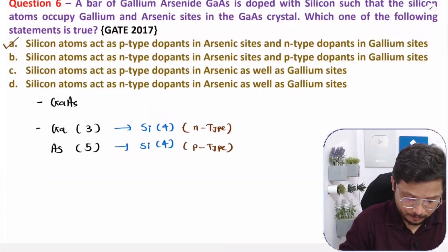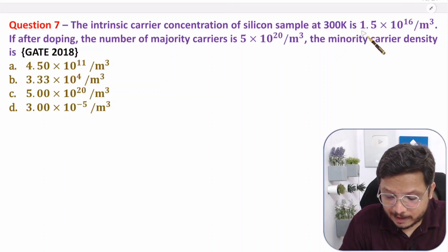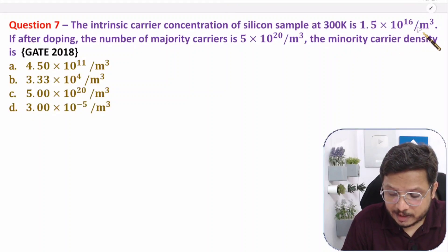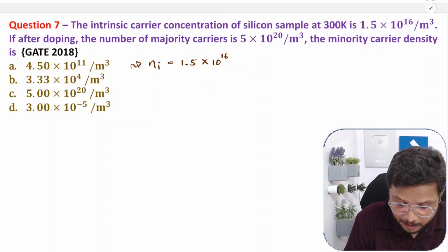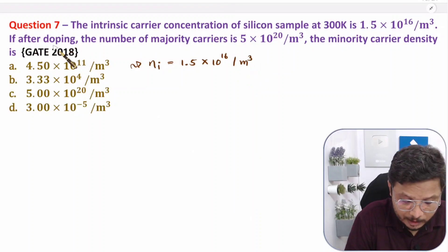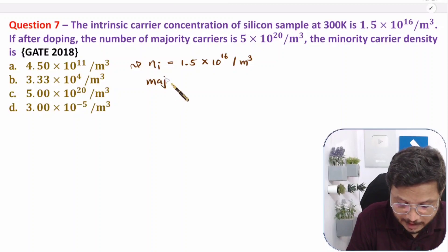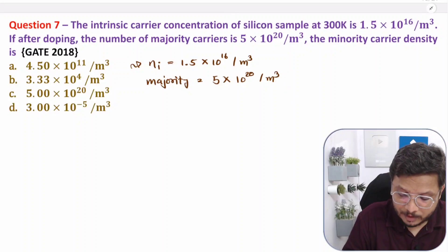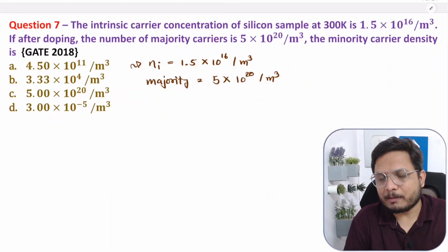Now I am going to solve the first question. The intrinsic carrier concentration of a silicon sample at 300 Kelvin is 1.5 into 10 to the power 16 per meter cube. So intrinsic concentration Ni is given as 1.5 into 10 to the power 16 per meter cube. After doping, the number of majority carriers is 5 into 10 to the power 20 per meter cube. The minority carrier density is to be found. By applying the mass action law, we can solve this.